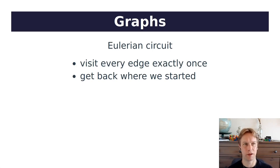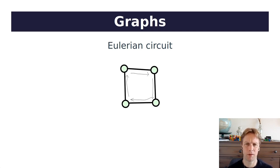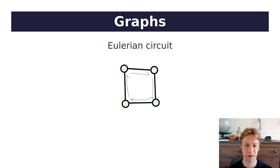Now probably the hardest bit of this video is how to pronounce Eulerian. Euler was a very famous mathematician who invented something called an Eulerian circuit — an idea in graph theory. An Eulerian circuit is a path through a graph where you visit every edge once and only once, and you get back where you started. The circuit part means getting back where you started. He did this famous thing with the Königsberg bridges. Here is an example: a graph with four vertices and some edges, and you can see a circuit that goes around, covers all the edges, and gets back where it started.